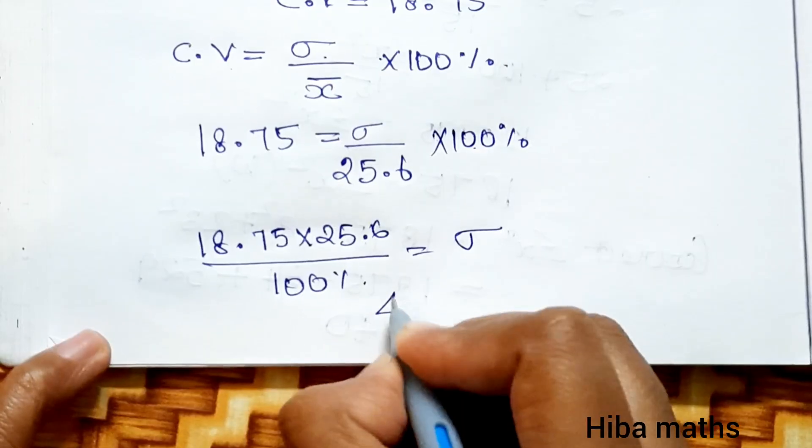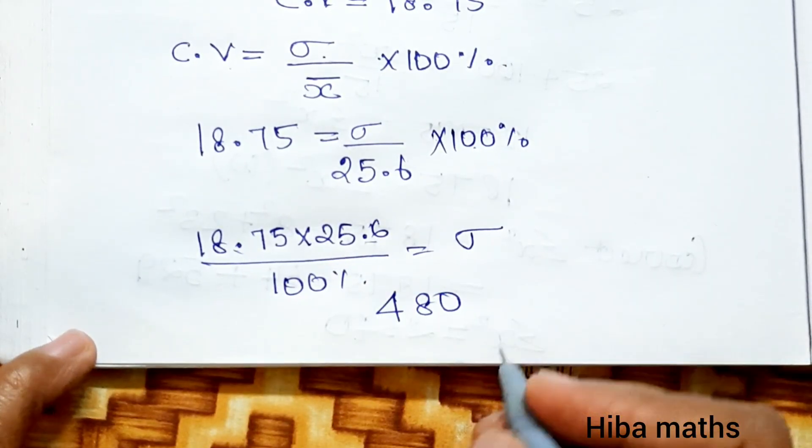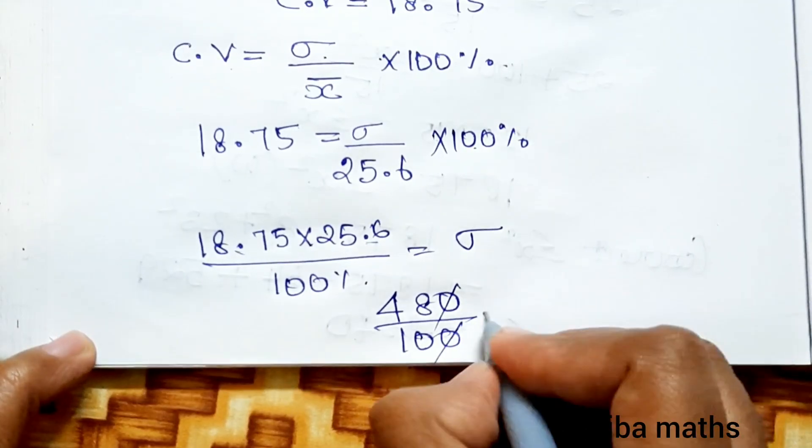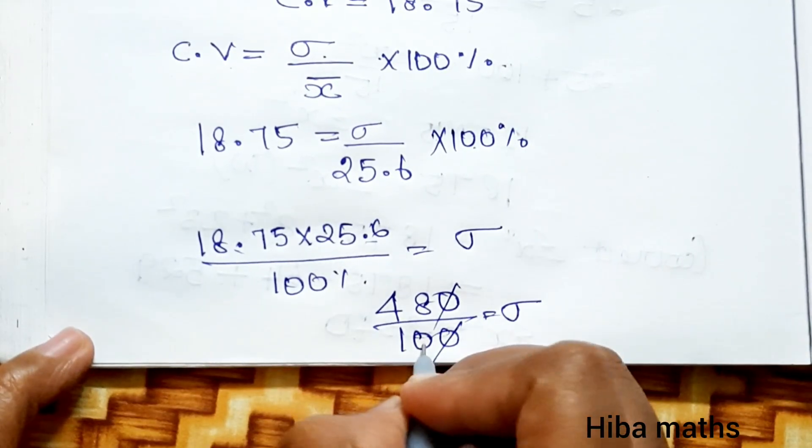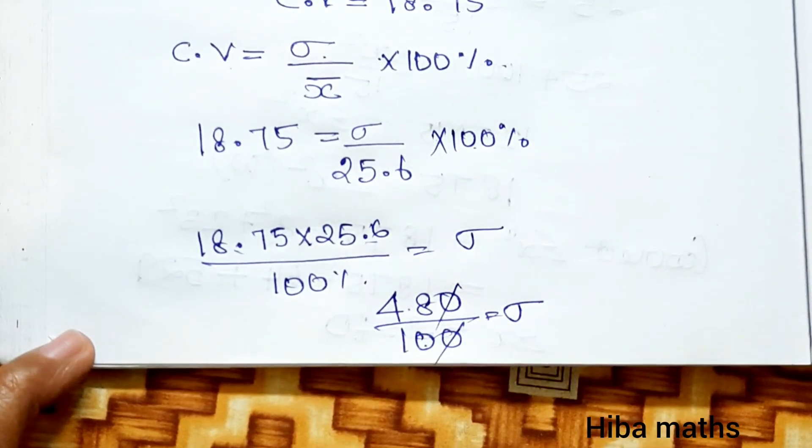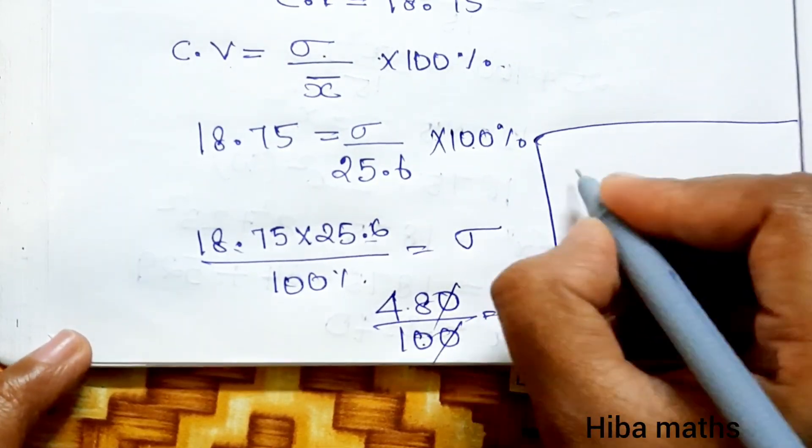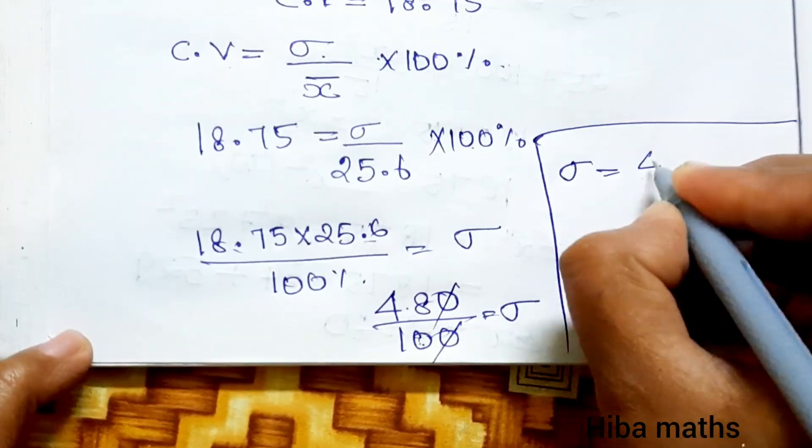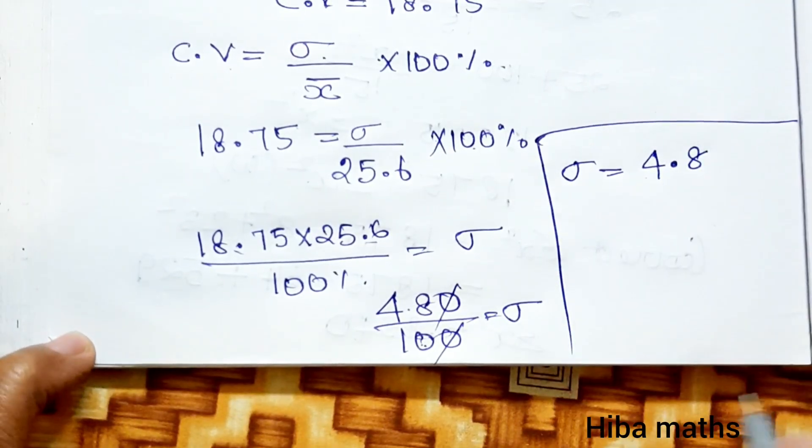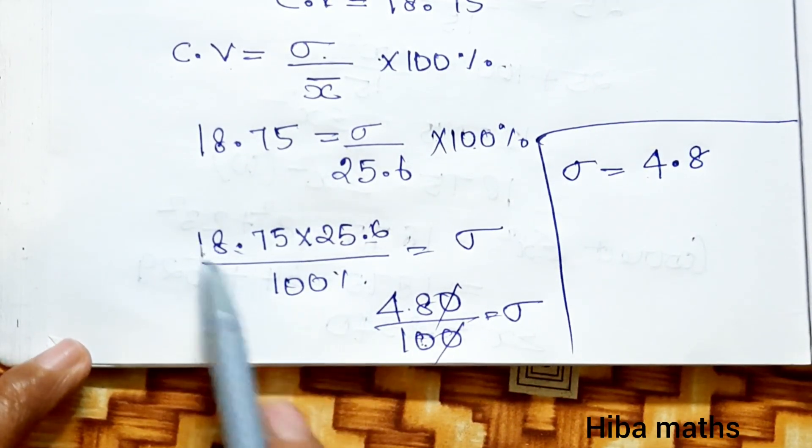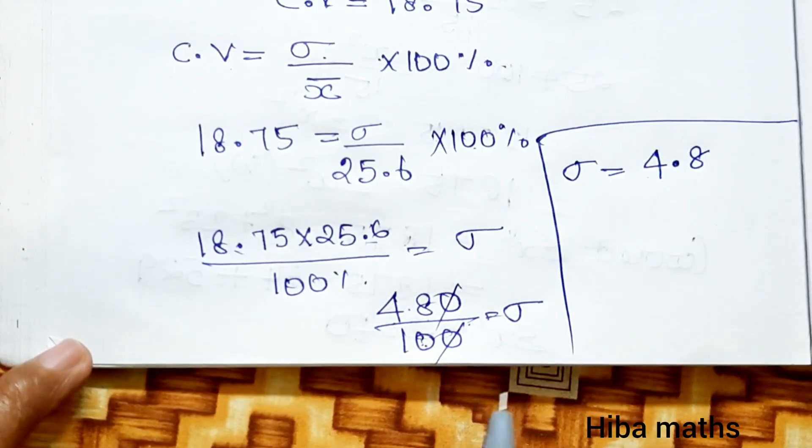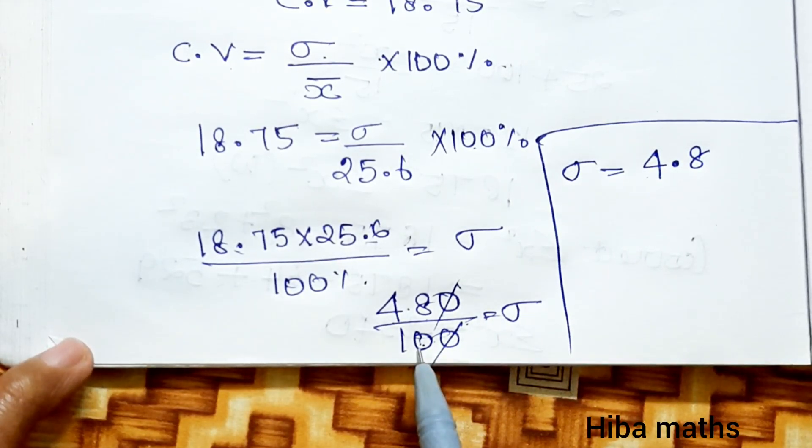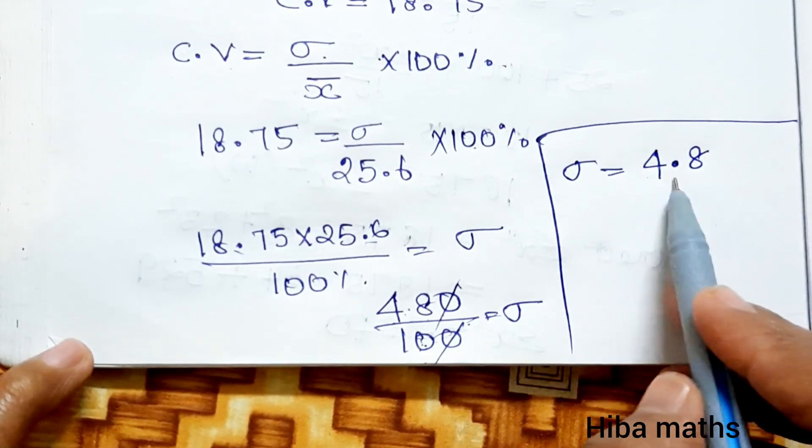Solve it, we get 480. If you multiply the two, you get 480 divided by 100. So the standard deviation is equal to, divided by 10 is equal to 4.8, that is 4.8.